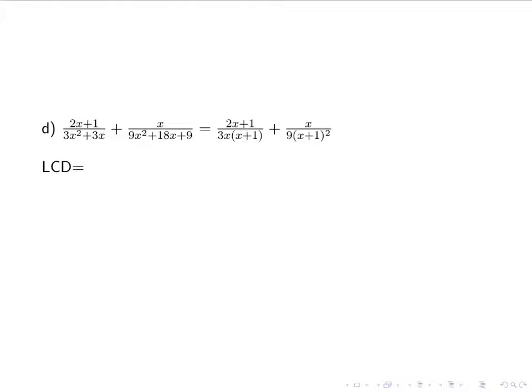So my LCD, I have an x, I have an x plus 1 squared, and I have a 3 and a 9. But my 9, remember, is 3 squared. So it's the same factor, 3 and 3, but I do have it squared. So I have 9, which was again 3 squared, x, x plus 1 squared. So for my first term, I have 3 of the 9, so I still need a 3. I have the x, I have 1 of the x plus 1's, so I need another x plus 1. For my second term, I have the 9, I have the x plus 1 squared, so I just need the x.